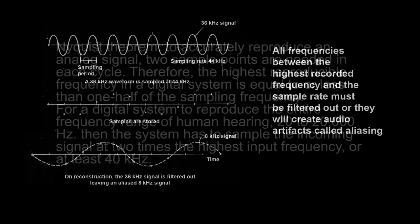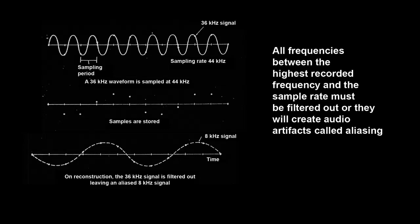The second part of the Nyquist Theorem states that the spectrum between the highest recorded frequency and the sample rate, in this case between 20 kHz and 40 kHz, must be filtered out. Waveforms that exist in this spectrum will be incorrectly rendered because there are not two samples per period. If not filtered out, these waveforms will create audio artifacts in the audible spectrum, a process called aliasing.